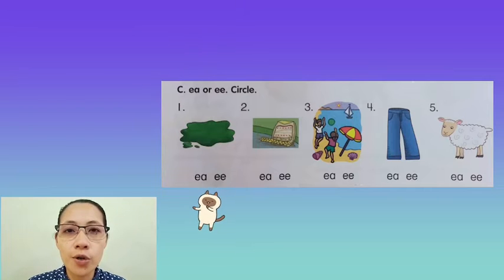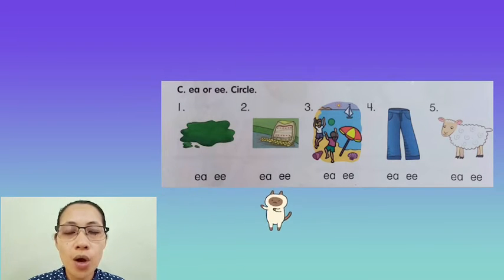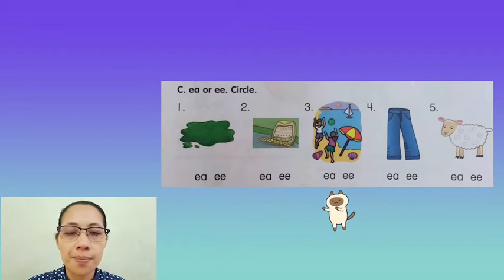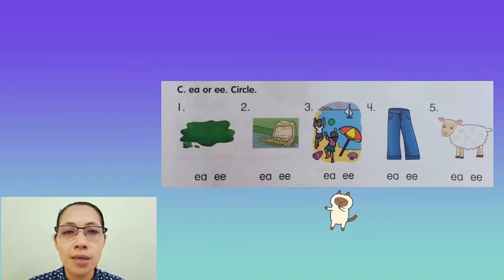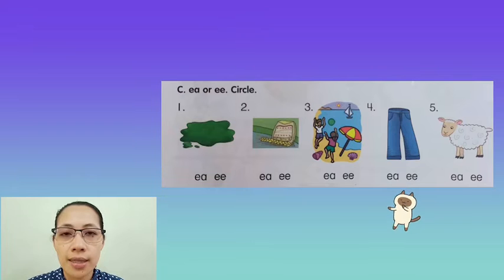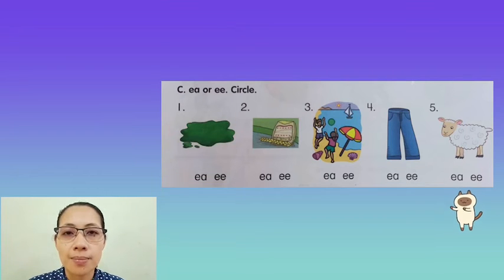Number 1, green. Number 2, wheat. Number 3, beach. Number 4, jeans. And number 5, ship.